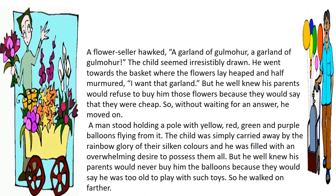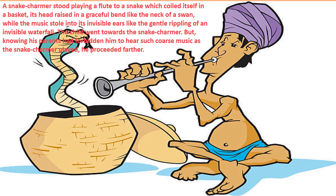Then he sees a flower seller shouting 'A garland of gulmohar!' The child is irresistibly drawn and goes toward the basket where flowers are heaped. He half-heartedly says 'I want that garland,' knowing his parents will refuse, calling it cheap. He moves on. Then he sees another man with colorful balloons — yellow, red, green, purple — and is carried away by the rainbow glory of the multiple colors, but again knows his parents will say no, so he walks on.